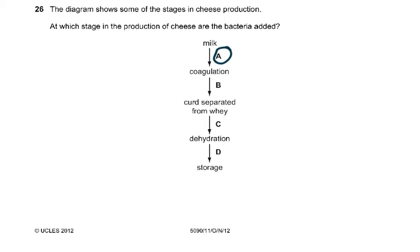Question 26: the diagram shows some of the stages in cheese production. At which stage are the bacteria added? As soon as the milk, we add bacteria, then it coagulates and the curd is separated, then dehydration, and then storage. So everybody knew it's in stage A. Either you knew it or you didn't know it, it's factual.